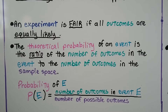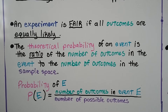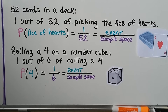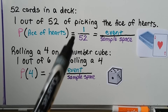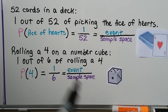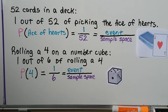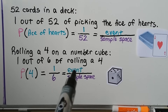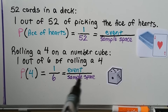The probability of an event E is the number of outcomes in event E over the number of possible outcomes in the sample space. There are 52 cards in a deck, so we have a 1 out of 52 chance of picking the ace of hearts — it's the event over the sample space. Or rolling a 4 on a number cube: there are 6 sides, so we have a 1 out of 6 chance of rolling a 4. The probability of getting a 4 is 1/6.